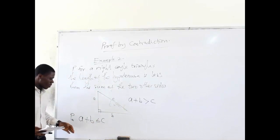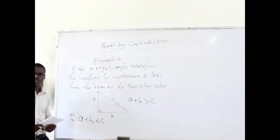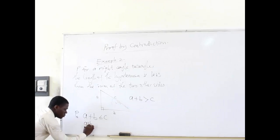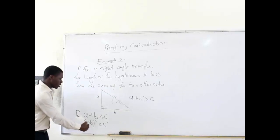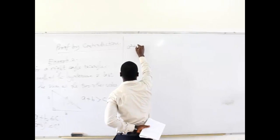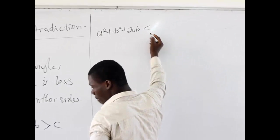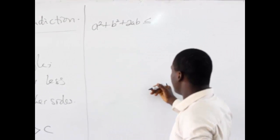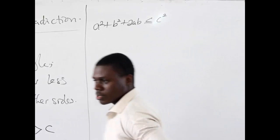So we are starting from here. From this particular step, we square both sides. Squaring both sides will result in A plus B squared less than or equal to C squared. Now, expanding the left side, we will have A squared plus B squared plus 2AB, which is less than or equal to C squared.